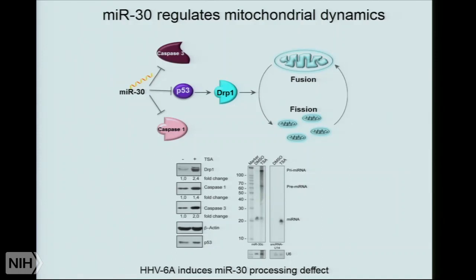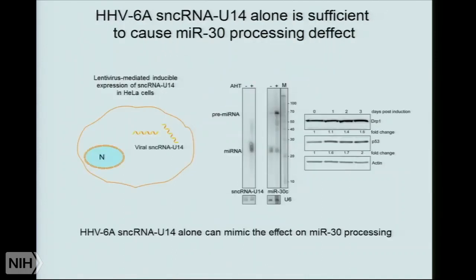We found that these small non-coding RNAs can actually fragment the mitochondria by themselves. For example, if we take HeLa cells and produce this small RNA — SNRNA U14 — without any other viral component, we create the same situation where microRNA-30 processing is defective. The pre-microRNA accumulates in the cells, you have DRP1 upregulation, P53 upregulation, and similar effects. That means we don't need all the viral proteins to have the effect. This one small RNA, which is basically 23 nucleotides long, can cause the effect.